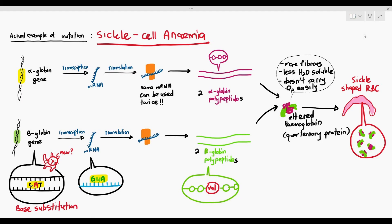Gene mutations can, by changing just one amino acid, sometimes cause significant impacts on a person's characteristics, as shown. I'm not saying gene mutations are always harmful — there are specific situations where gene mutation can be beneficial to the organism. We will discuss these examples in chapter 10 when studying antibiotics and their effects on bacteria, and also in chapter 17 when studying evolution and natural selection.